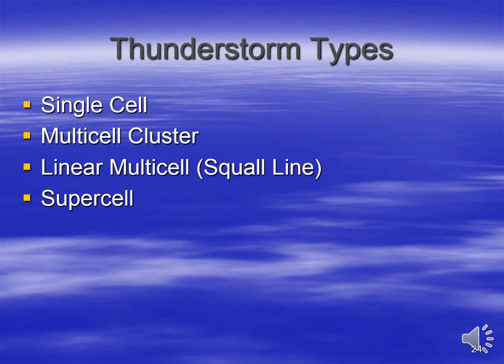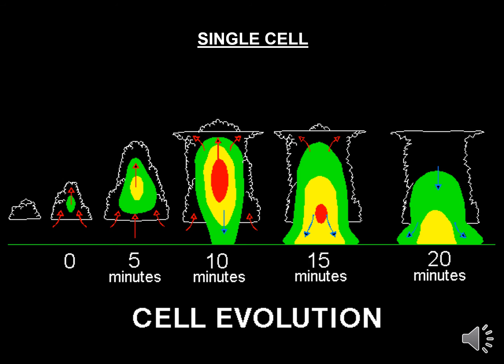In the next section, we will discuss the four main types of thunderstorms: single-cell, multi-cell cluster, linear multi-cell, and the supercell. The first type is the single cell, which is essentially a storm that goes through the three-stage life cycle from towering cumulus to mature to dissipation within a 20 to 30 minute time period. These storms are also often referred to as air mass thunderstorms.